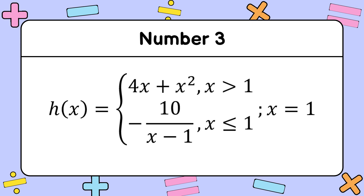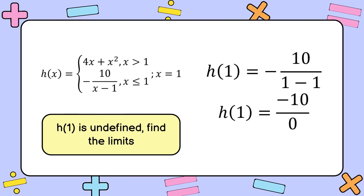For the third item, we have the piecewise function h of x equal to 4x plus x squared if x is greater than 1, and negative 10 over x minus 1 if x is less than or equal to 1, given x is equal to 1. Since the given value x equal to 1 satisfies the restriction x less than or equal to 1, we use negative 10 over x minus 1, and substituting 1 gives h of 1 equal to negative 10 over 0.